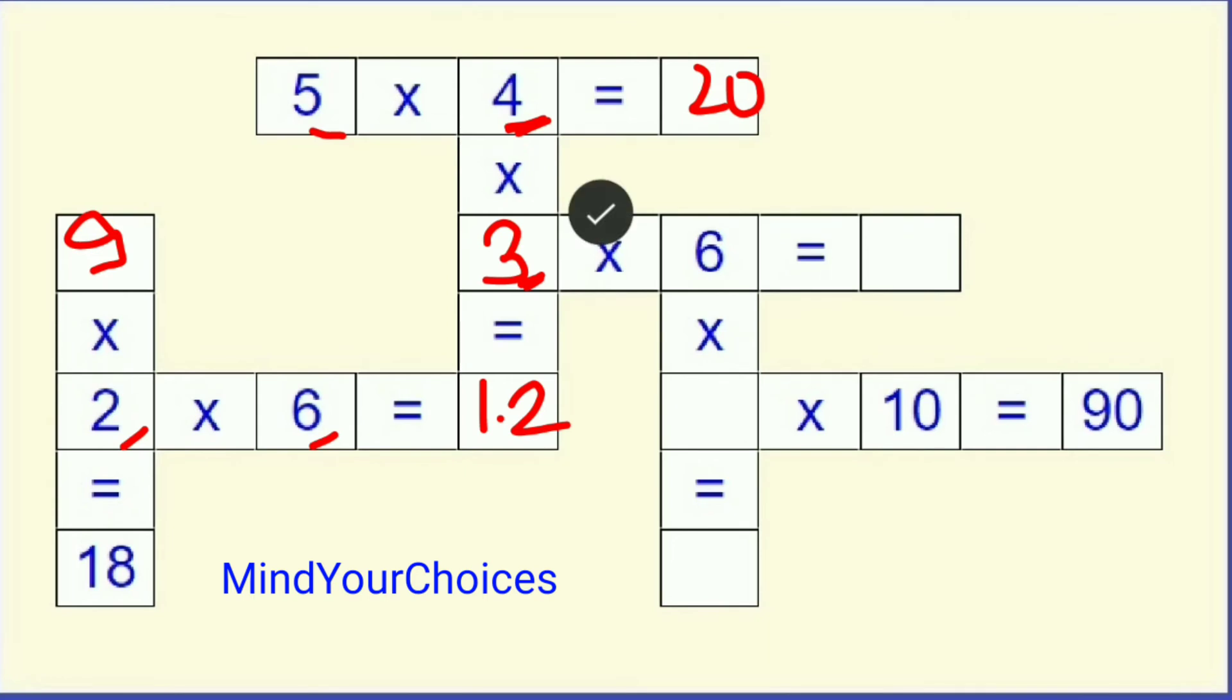After that, you can see here 3 into 6, 3 times 6 is 18. So, we can write here 18. After this, you can see here, we have to fill this box. This into 10 is equal to 90. So, we have to write here 9, 9 into 10 is equal to 90.